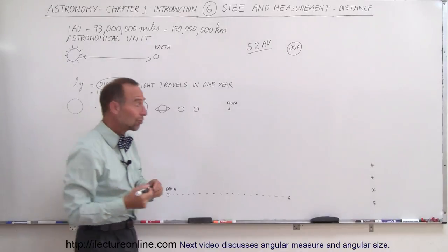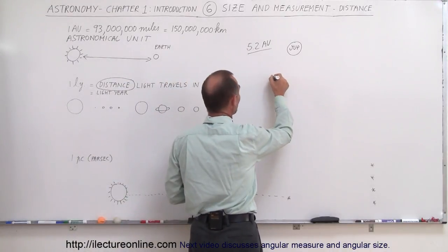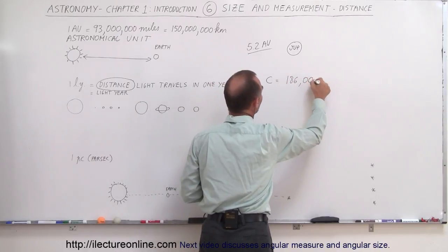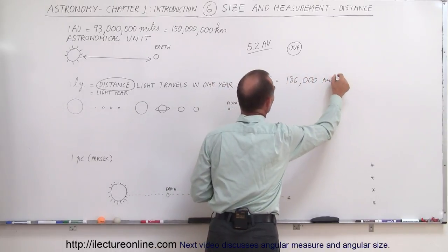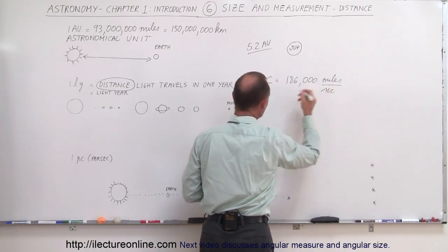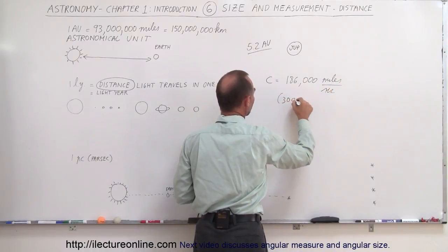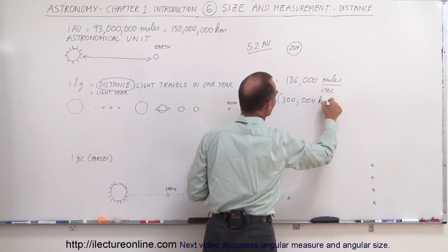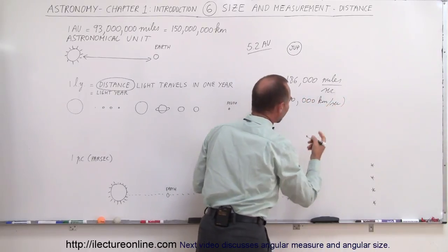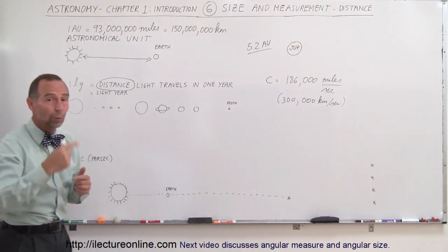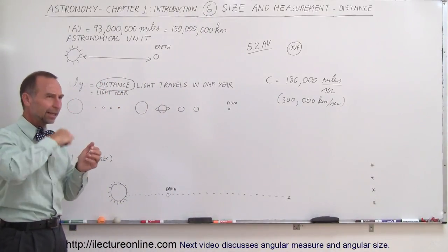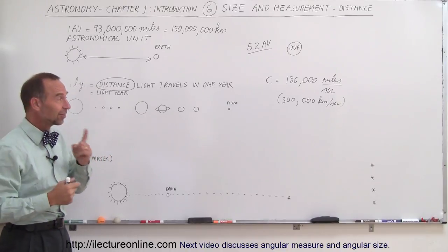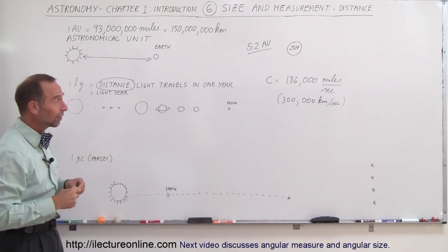So how far does light travel in a year? Well it turns out the speed of light, we use a small letter c to indicate that, is 186,000 miles per second. That's quite a ways in one second. Also in SI units, it's 300,000 kilometers per second. So 300,000 kilometers is seven and a half times around the world. If light could travel in a circular path, it could go around the earth seven and a half times in a single second.